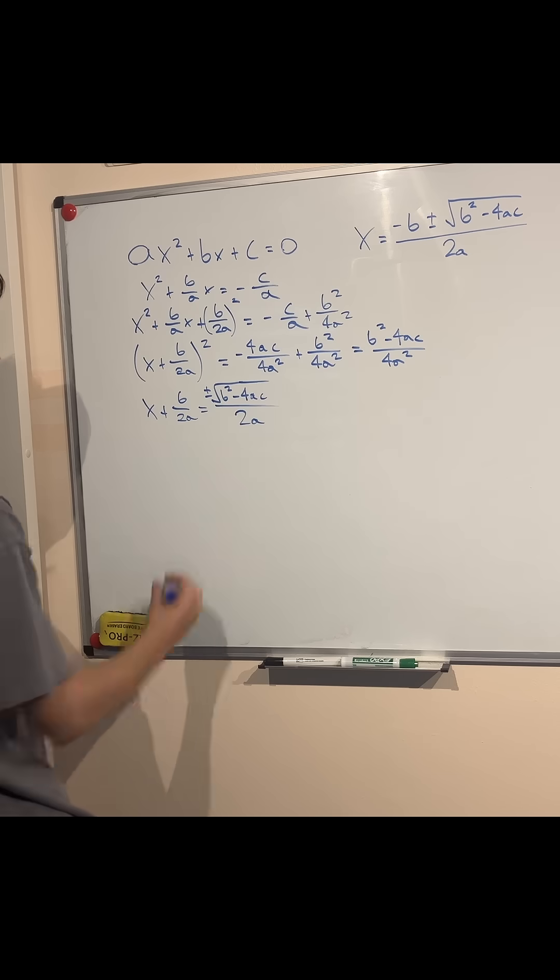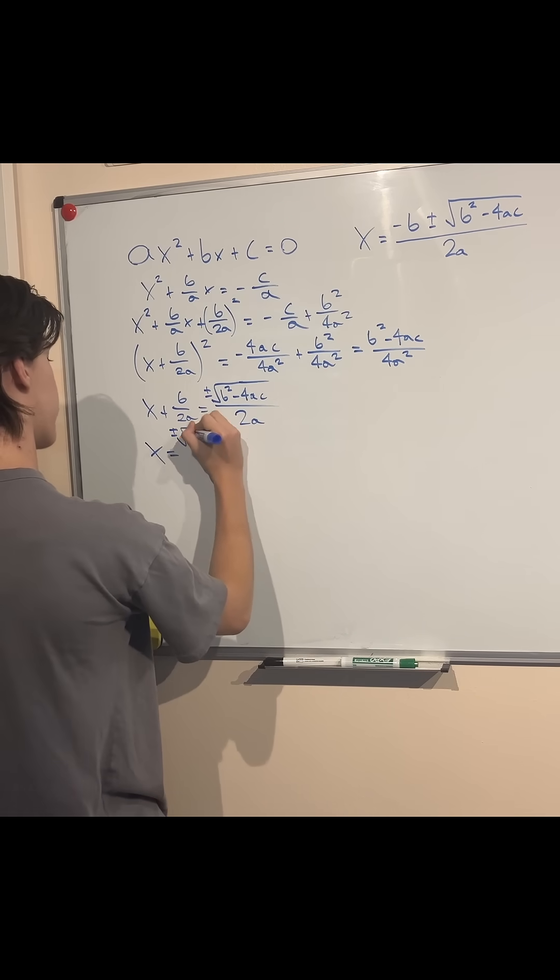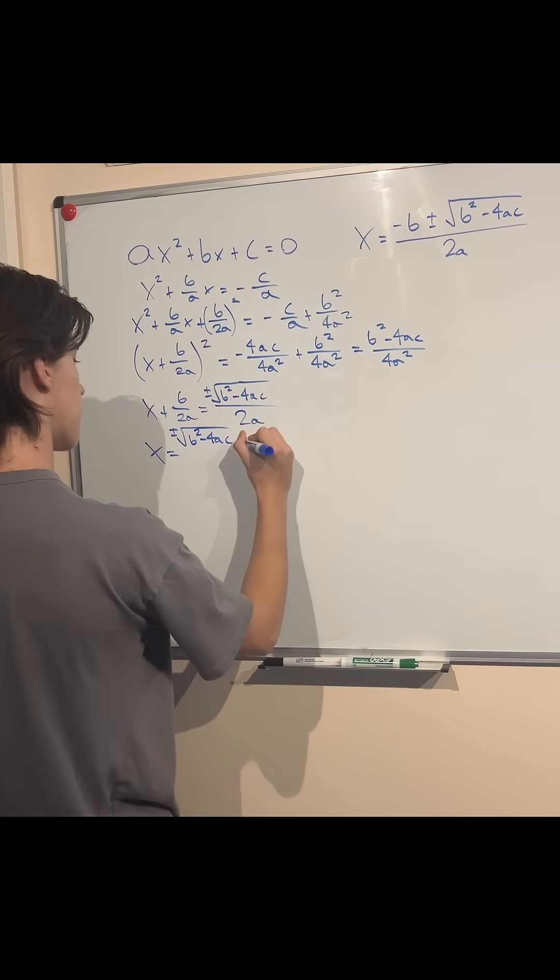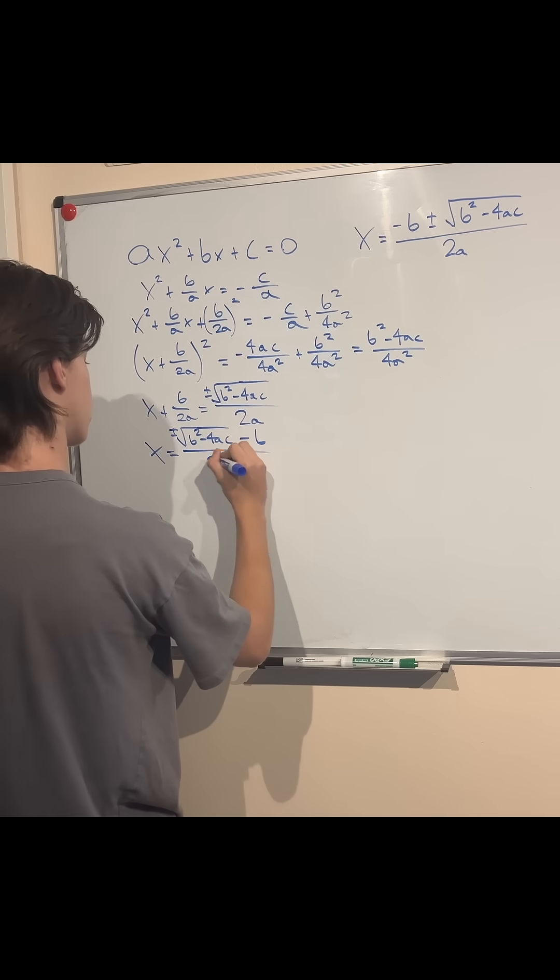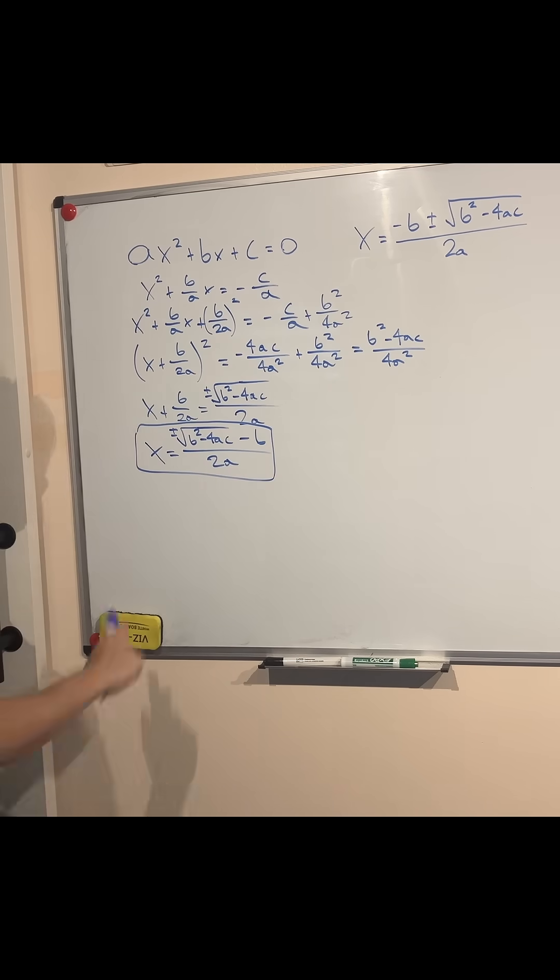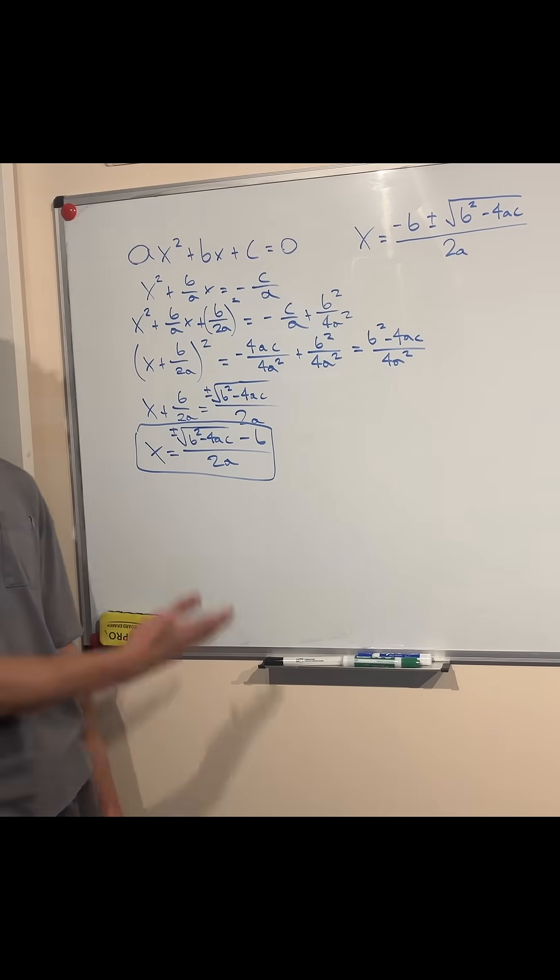And so finally, we get that x is going to be the positive and negative root of b² - 4ac minus b, all over 2a. Simply by moving over our last term to the other side. And just like that, the quadratic formula is derived. Now you know.